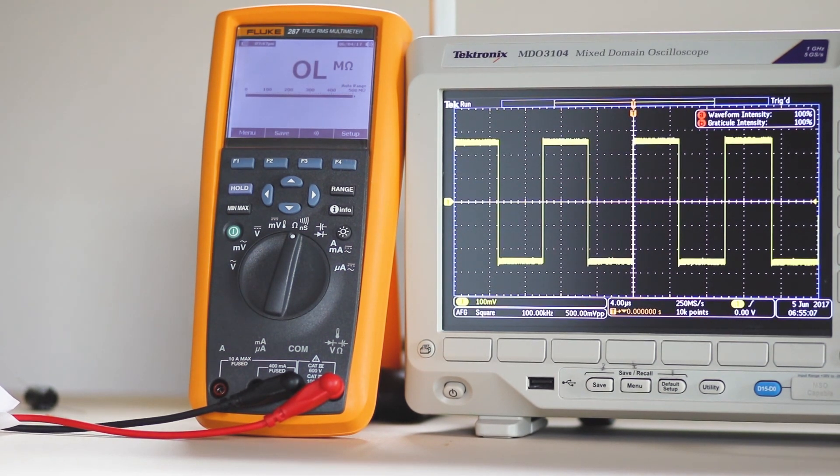There are other methods for determining capacitance or inductance in an oscilloscope. For example, a resonant circuit can be constructed with known and unknown devices, and the peak frequency can be measured.